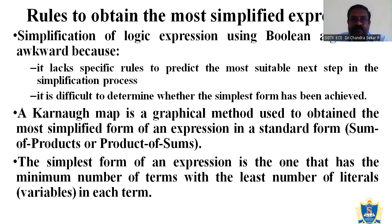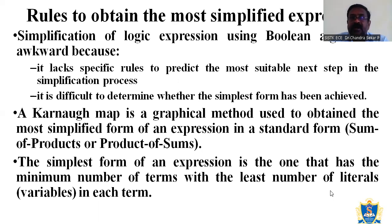Next, we will discuss about the rules to obtain the most simplified expression. The simplification of the logical expression by using Boolean algebra is awkward because it lacks specific rules to predict the most suitable next step in the simplification process, and it is difficult to determine whether the simplified form has been achieved or not. These are the two drawbacks when using Boolean algebra. A K-Map is the graphical method used to obtain the most simplified form of an expression in a standard form.